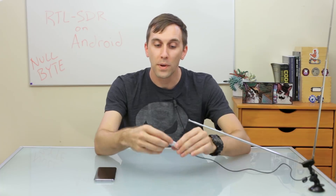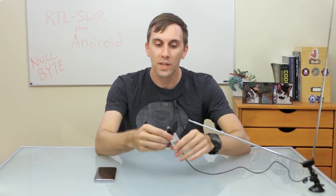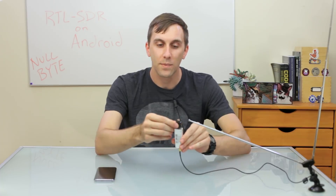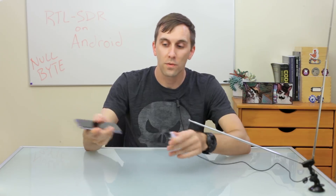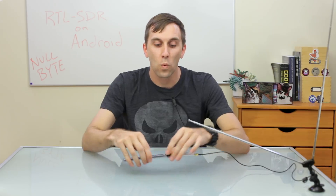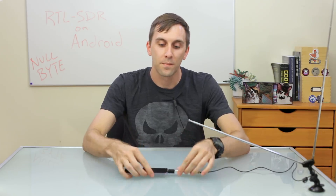To use this, you usually have to plug it into a computer, but you can also just plug in an on-the-go adapter to make it compatible with an Android smartphone without needing root. You just need to plug it in, and then once you have an antenna as well, you'll be able to download an application and use your smartphone to look into the radio spectrum. Once you have yours plugged in, we can begin.